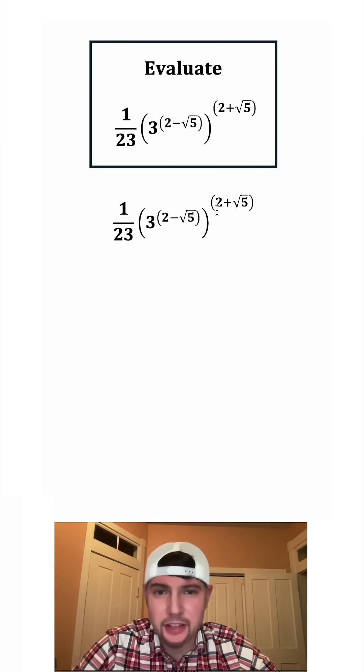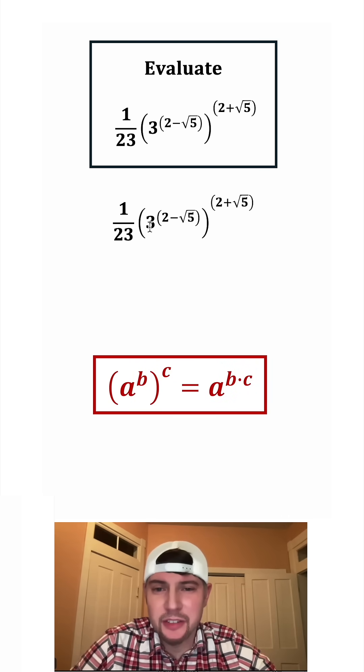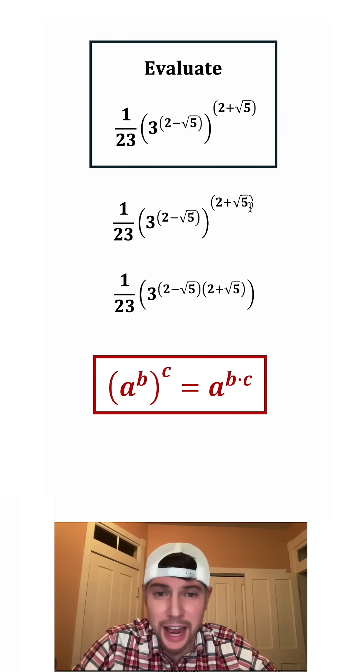For the first step, we're going to do this to the power of this. That's going to use these notes right here. Anytime you have something like A to the B to the C, that's equal to A to the B times C. So 3 to the this to the that is equal to 3 to the this times that.